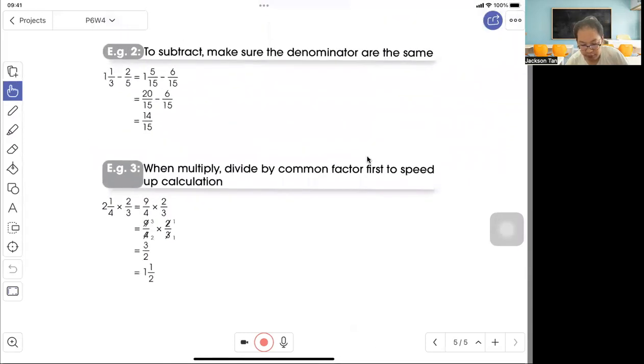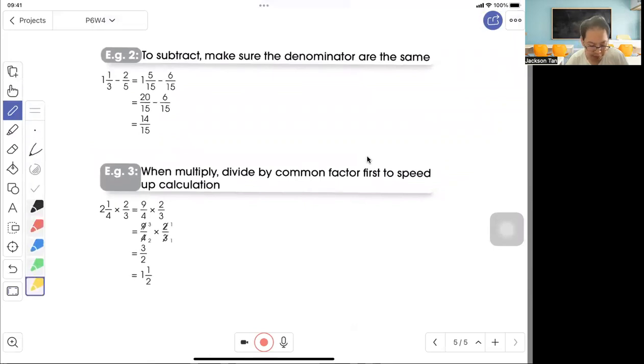To subtract, same thing: make sure the denominators are the same. For 3 and 5, common denominator is 15. To get 15, multiply by 5. 1 times 5 gives 5. Here, multiply by 3. 2 times 3 gives 6. But 5 cannot minus 6, so you borrow the 1 whole. 1 whole is actually 15 out of 15. That's how we get 15 plus 5 equals 20. 20 out of 15 minus 6 out of 15, and the answer is 14 out of 15.